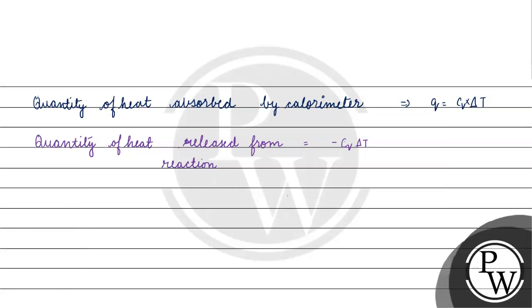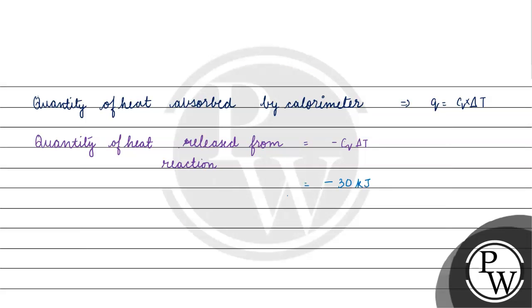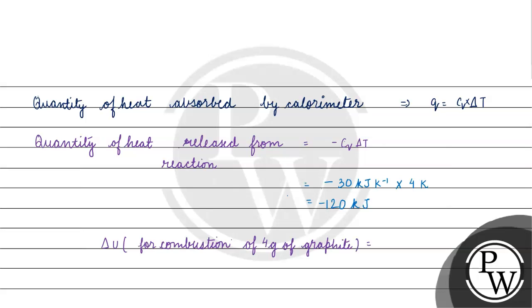Cv is 30 kilojoule per kelvin. So the heat released equals minus 30 kilojoule per kelvin multiplied by delta T. Delta T is 304 minus 300, which equals 4 kelvin. That gives us minus 120 kilojoule. This is the value of delta U for the combustion of 4 grams of graphite, which is minus 120 kilojoule.